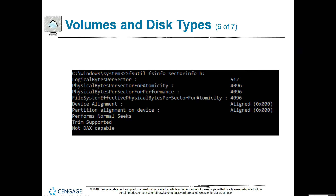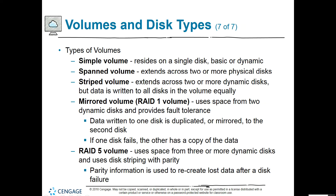There are different volume types. A simple volume resides on one single disk. A spanned volume extends across two or more physical disks. A striped volume extends across two or more dynamic disks. A mirrored volume uses space from two dynamic disks and provides fault tolerance — everything written to one disk is duplicated to the second. If one disk fails, the other has an identical copy. You can replace the failed drive, repair the mirror, and have two good functioning drives again. That's RAID Level 1.